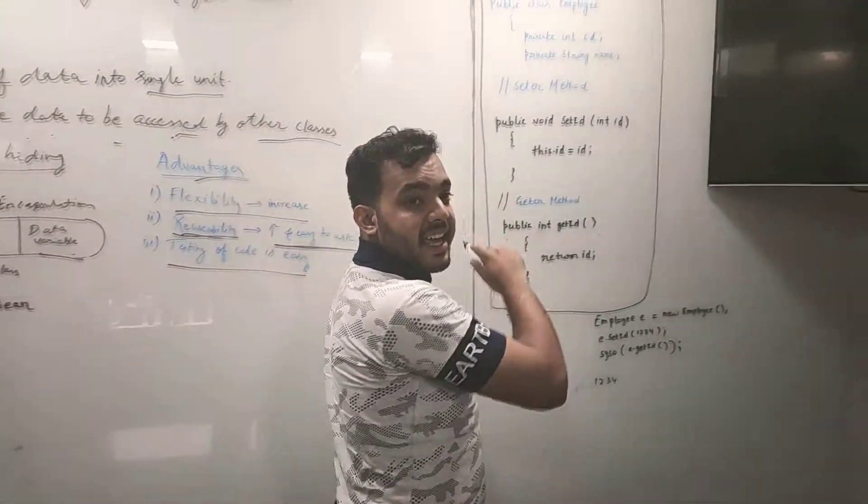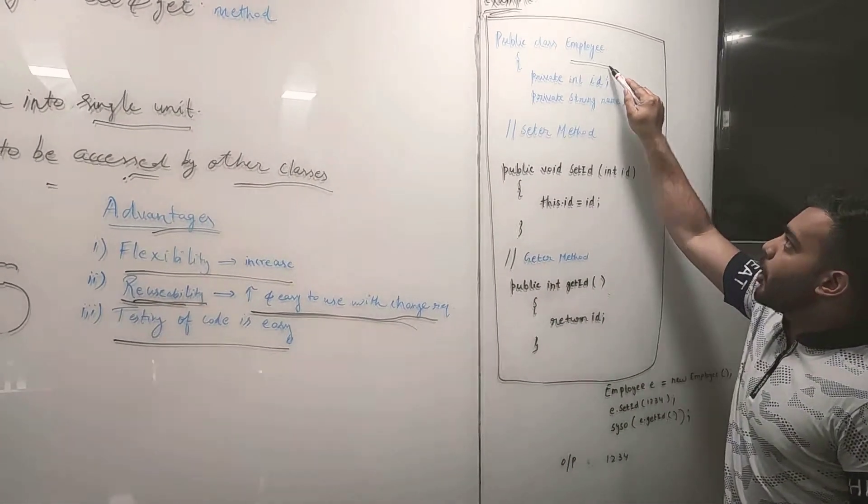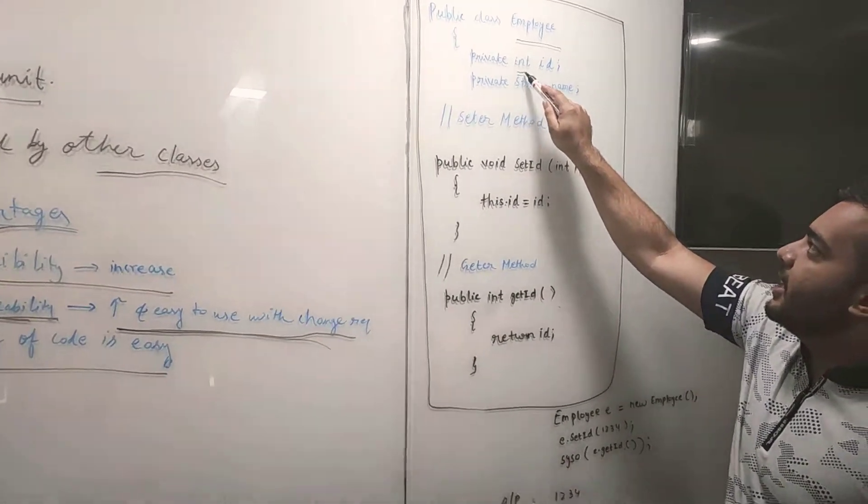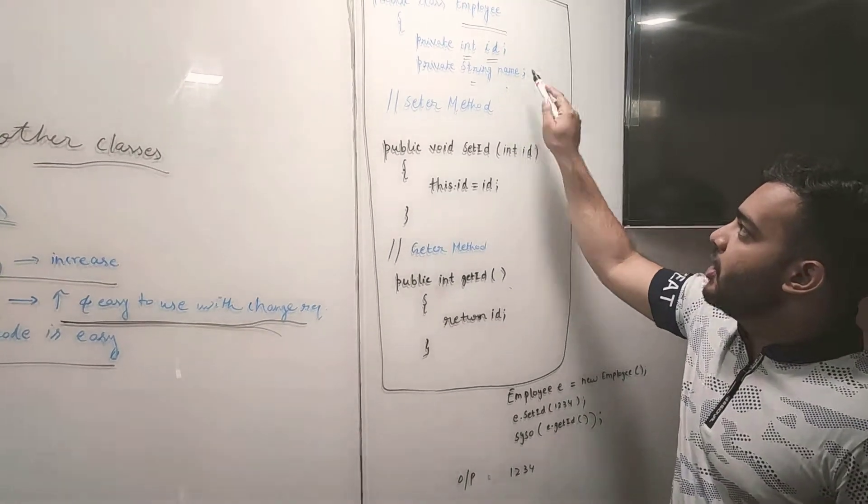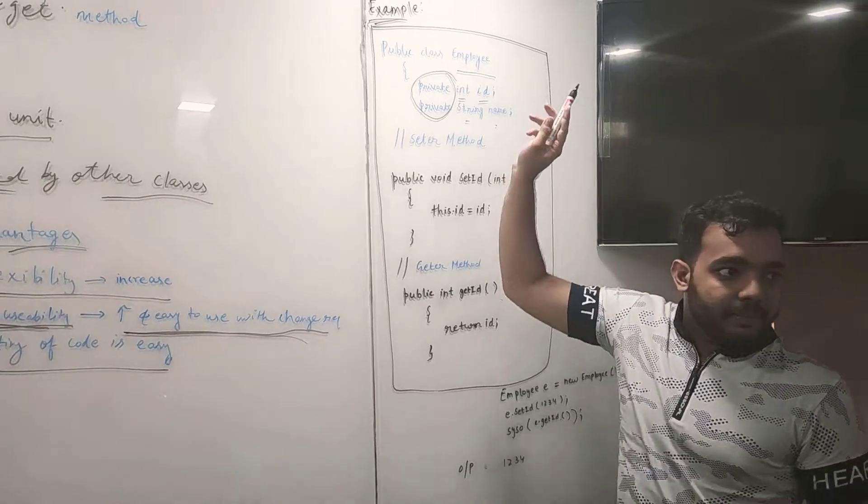Here is an example of Encapsulation. We have taken a class Employee with variable int id and string name. In Encapsulation, we have to make them private.